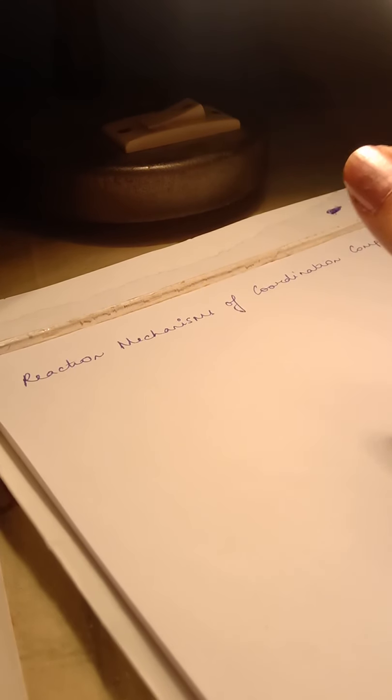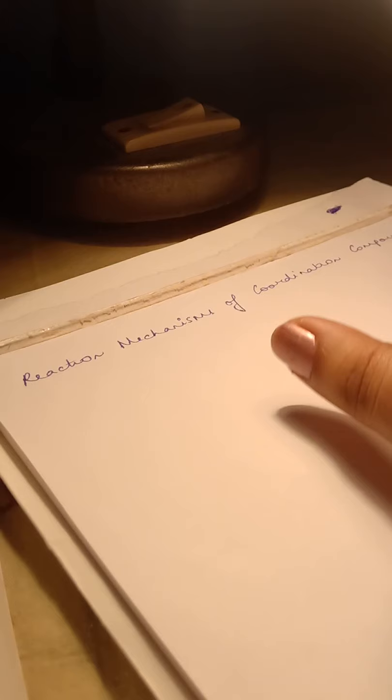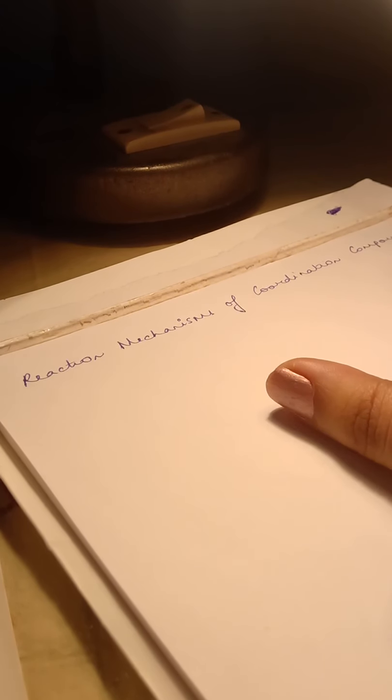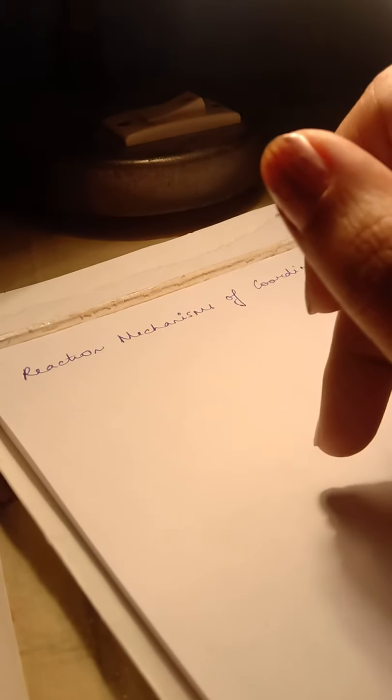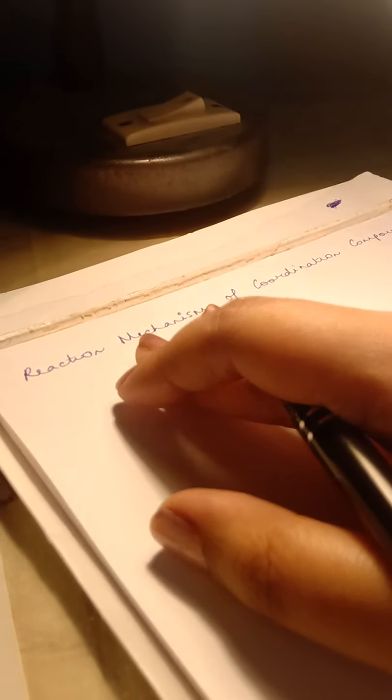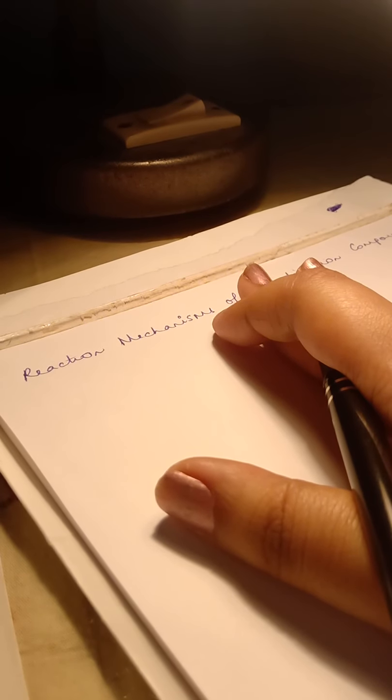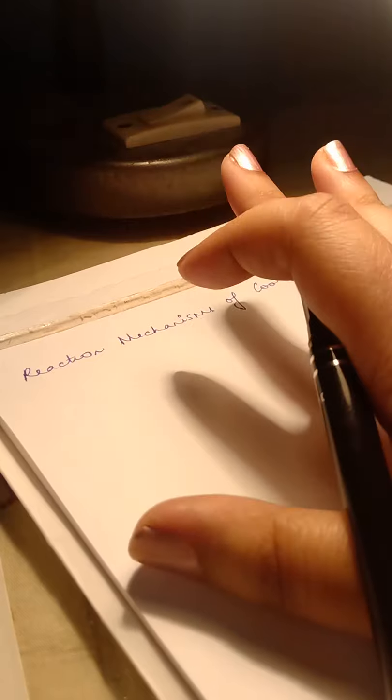This decomposition to the products can be in a single step or can be a multi-step process which is dependent on the specific reaction under consideration. When the reactants collide, the collision involves a lot of kinetic energy. This kinetic energy gets converted to potential energy, which is expressed as a change in the bond lengths or a change in the bond angles.